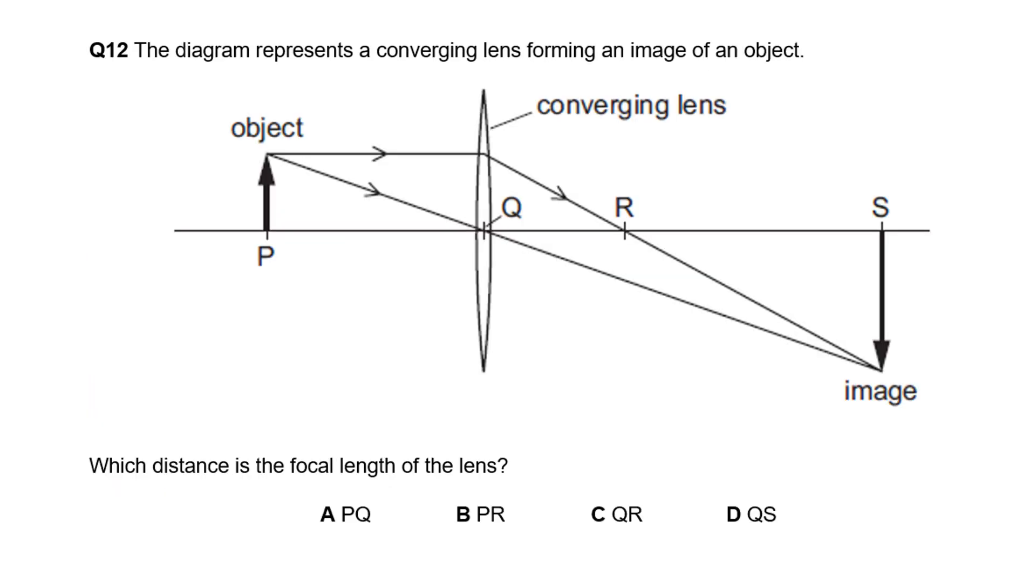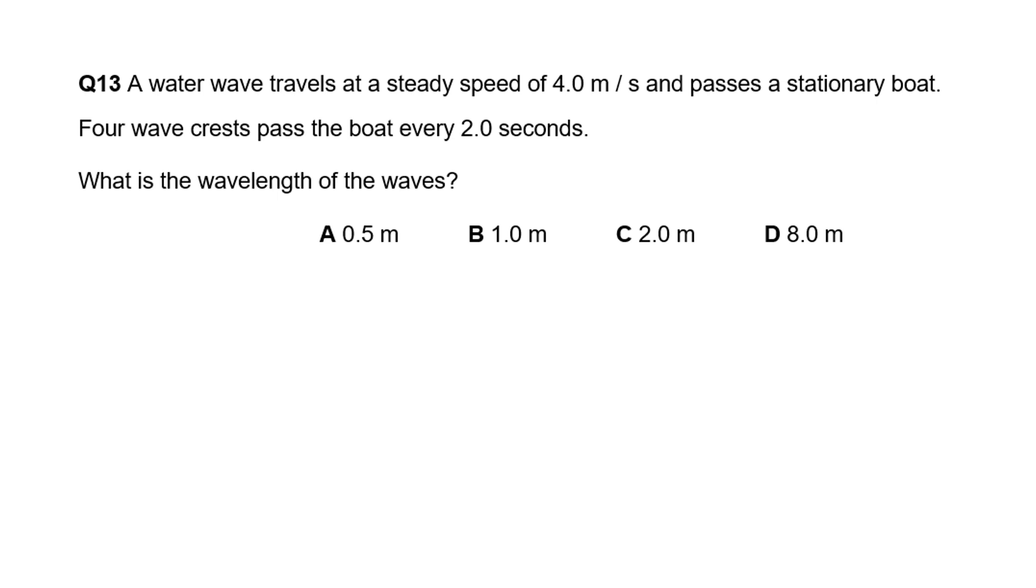Looking at a lens, we can see a parallel ray being reflected through R. That tells us that the distance QR is the focal length—it's the distance where a parallel light ray is reflected.